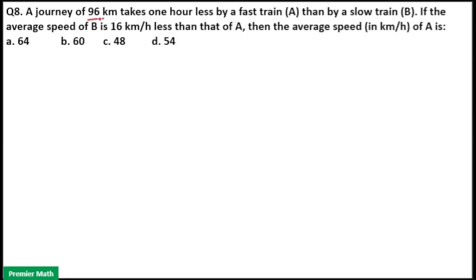A journey of 96 km takes 1 hour less by fast train A than by a slow train B. If the average speed of B is 16 km per hour less than that of A, then the average speed in km per hour of A is.